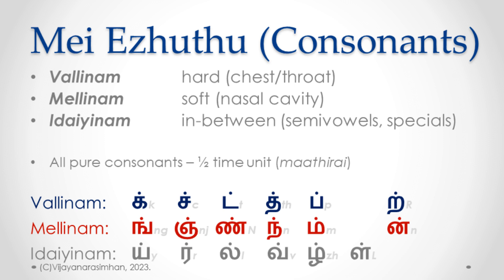The hard and soft consonants are paired as counterparts: Ka/Nga, Cha/Nya, Tha/Na, Tha/Na, Pha/Ma, Ra/Na. These pairings are reflected throughout Tamil grammar and we will come back to them later.